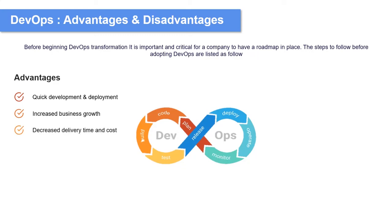The third advantage of using DevOps is decreased delivery time and cost. DevOps helps escalate your business profit by decreasing software delivery time and logistic costs. It's not only about quickly developing and deploying your application, but also about lowering the cost of production and development of your software or product.